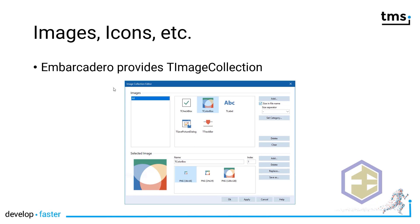If you run the same application on a 200% high DPI display, the VCL will automatically use the 32x32 image, which has not been provided in this preview. What will happen then is that the VCL will try to interpolate between the 24x24 and the 128x128 images.